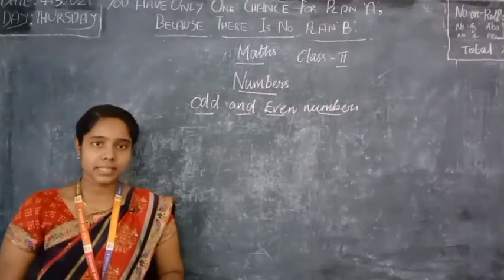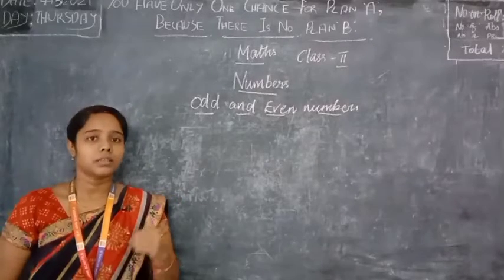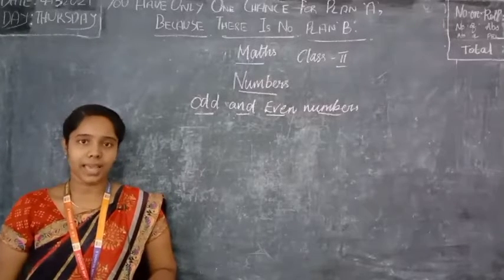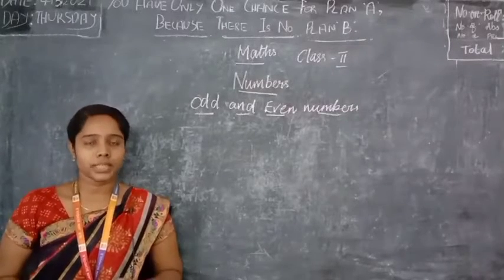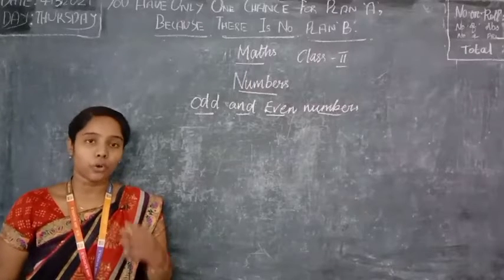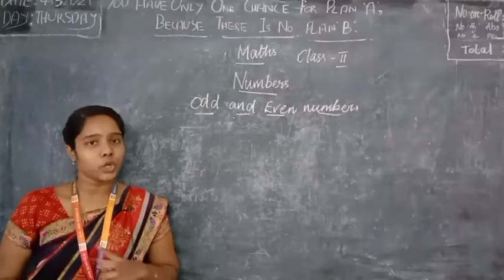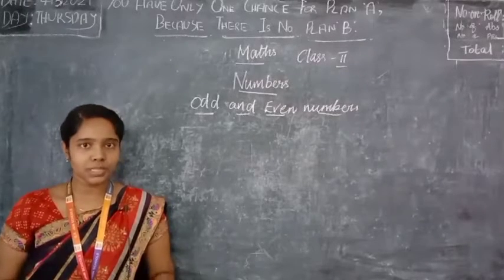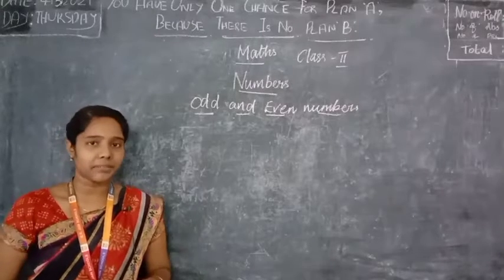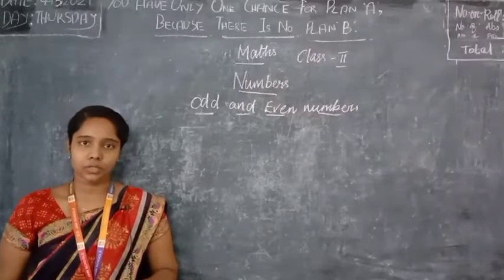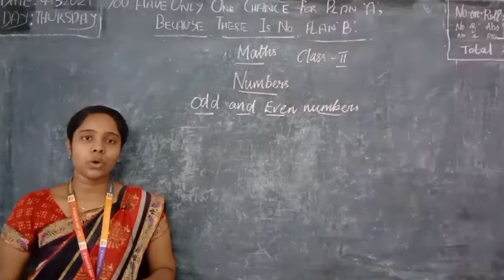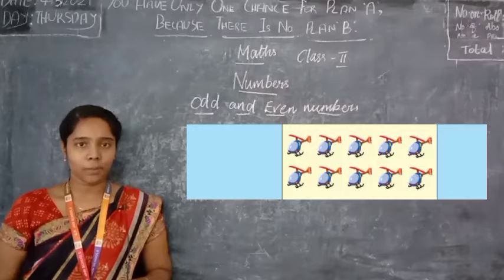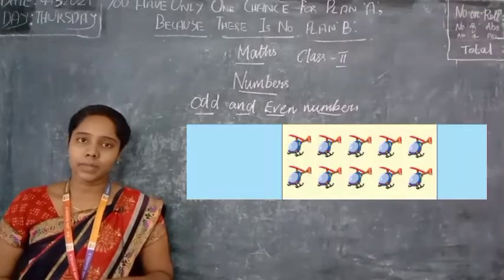Now let us see an exercise and find out whether the given number is an even number or an odd number. I am going to show you sets of pictures and you are going to group the pictures in twos and tell me whether the number is an even number or an odd number. See this picture — these are helicopters. Count and tell me how many helicopters are here.